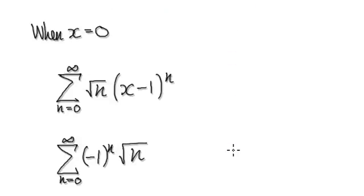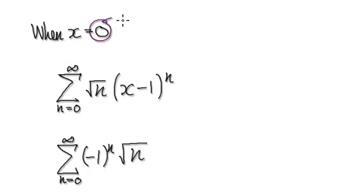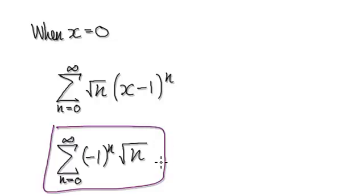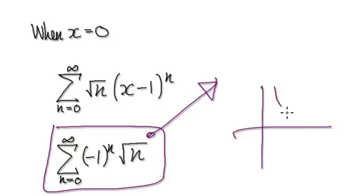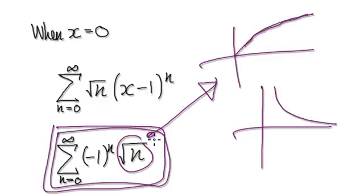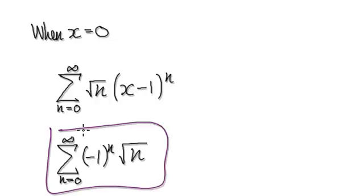To manually check: when x = 0, going back to the original series, we put 0 in — 0 minus 1 gives negative 1 — so you get an alternating series. You can use the nth term test here. The terms involve square root of n, which climbs all the time, getting bigger and bigger. In order for any series to converge, the terms must head towards 0. Since the square root just keeps growing, the series diverges at x = 0.